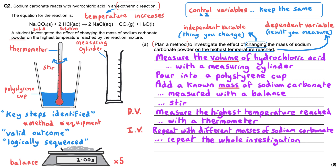The final step is to acknowledge the control variables — the variables you need to keep the same each time. The most important three are: firstly, the starting temperature of the acid, because if you're measuring the highest temperature reached, starting at the same temperature every time is critical as it will definitely affect the highest temperature reached.